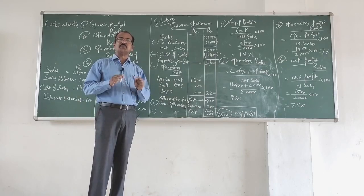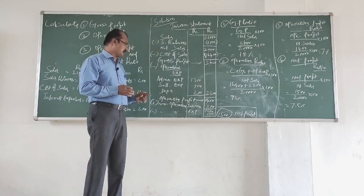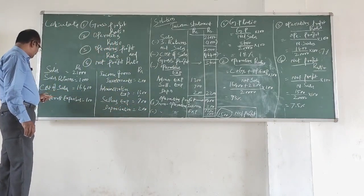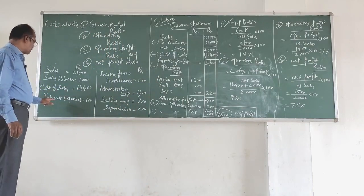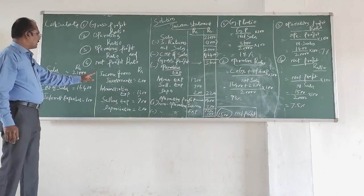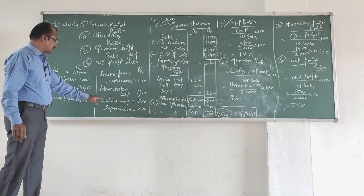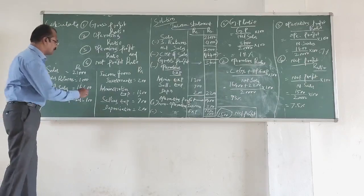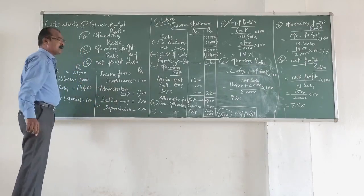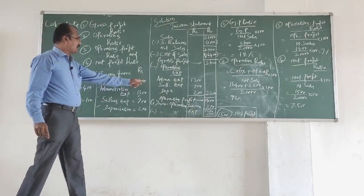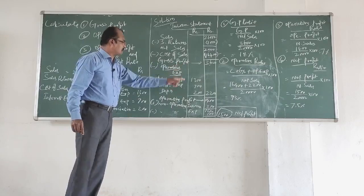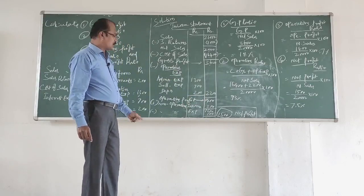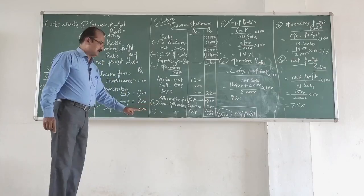Looking at the expenses in the problem: interest expenses is non-operating expenditure; administrative expenses, selling expenses, and depreciation are all operating expenses. These three operating expenses are subtracted from the gross profit, and we find the operating profit amounts to 1,400 rupees.